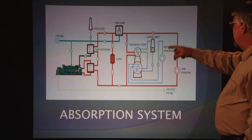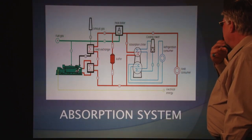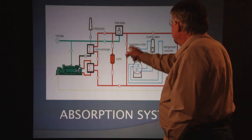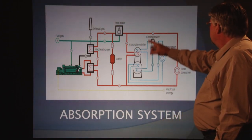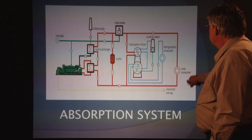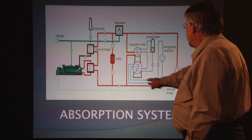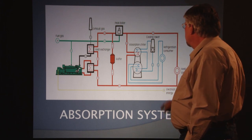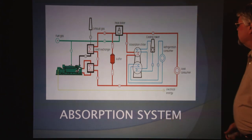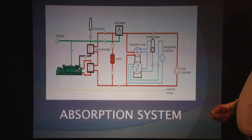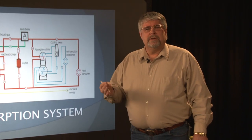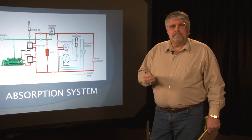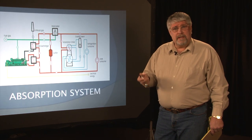We've got a diagram here of how this process works. An absorption system — we've got the processor over here, and the heat condenser, or heat consumer, over here. We've got electrical energy coming out of the device over here. Basically this is an absorption system in case it's mentioned on your report by a third party expert in that field. You'll know exactly what that is.